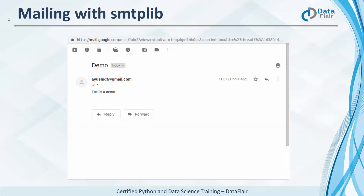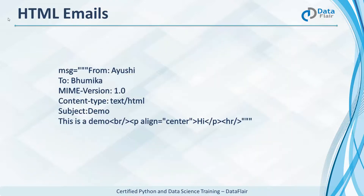And so we've sent an email and received it at the receiving email address. Now we can also send HTML emails with Python. The rest of the steps are the same.